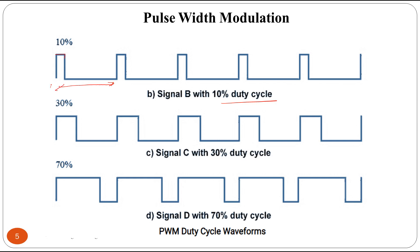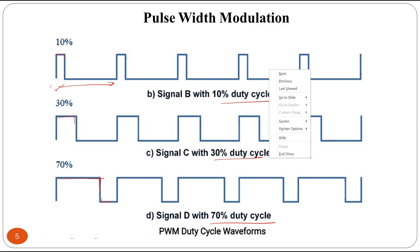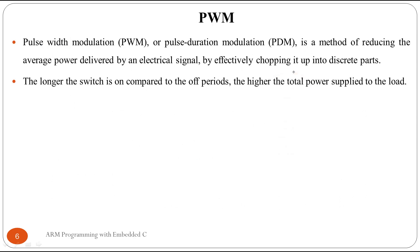A 10 percent duty cycle signal will be 10 percent in the on state and 90 percent in the off state. Next we have a signal with 30 percent duty cycle, which has lower on time compared to off time. And next we have a 70 percent duty cycle signal, where 70 percent of the time the signal is in the on state and only 30 percent it is in the off state. These are the PWM duty cycle waveforms.